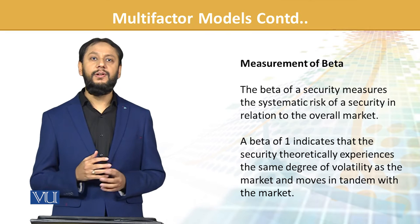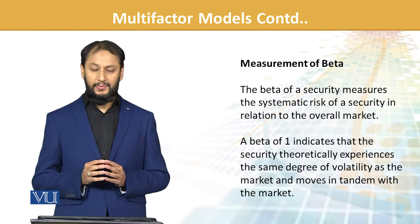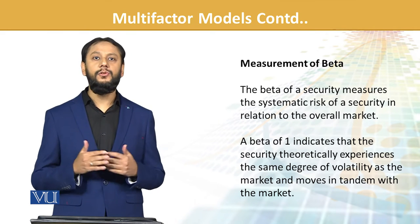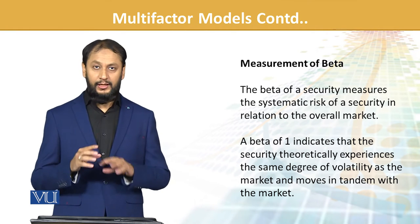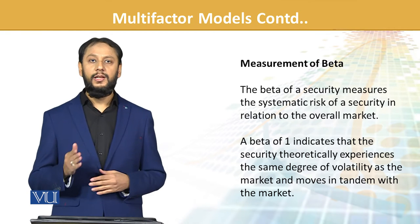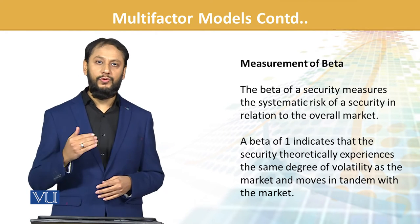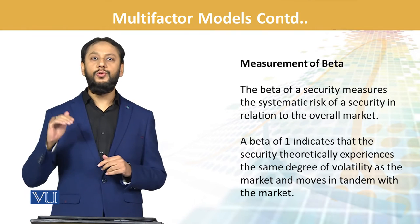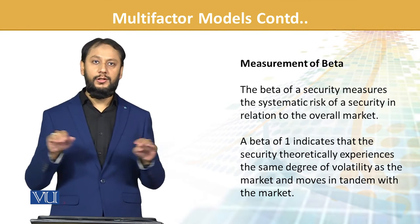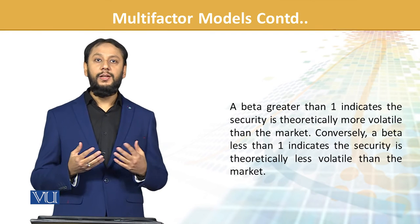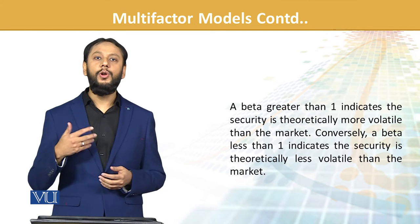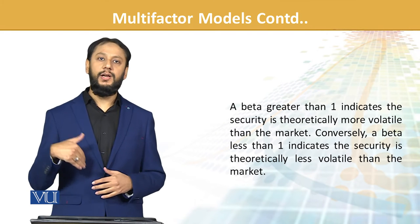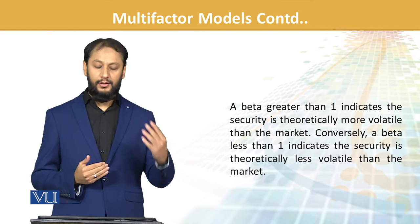Measurement of beta: yeh ek bada important factor hai. Sensitivity jo aapke paas hai — beta — wo kaise calculate hoga. Beta of a security measures the systematic risk of that security in relation to the overall market. Main jo beta hai wo market se aapki linkage aur sensitivity ko gauge karta hai. Beta of one indicates that the security theoretically exhibits the same degree of volatility — agar beta one ka hai to factor ka risk ya market ka risk wahi stock ka risk hai. Beta greater than one means ke jo hamara stock ya portfolio hai uski volatility market ke comparison mein zyada hai — higher beta, higher impact on fall aur we should expect a higher return.